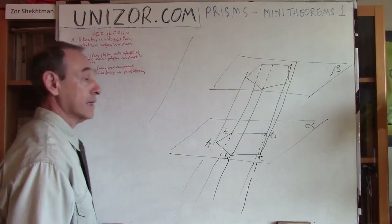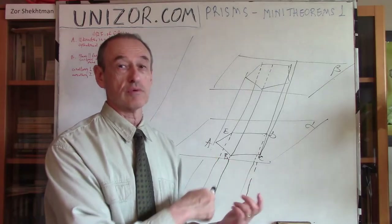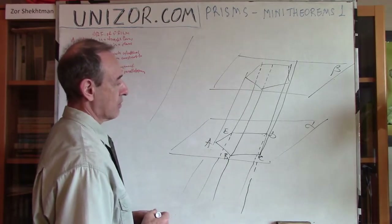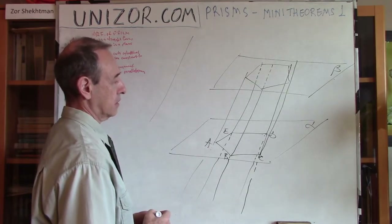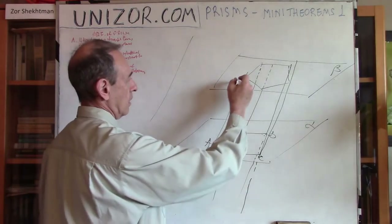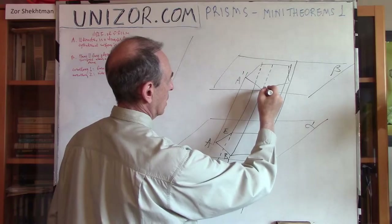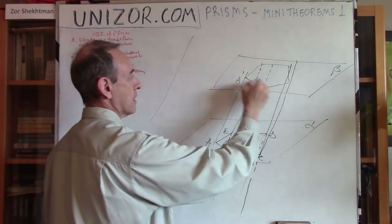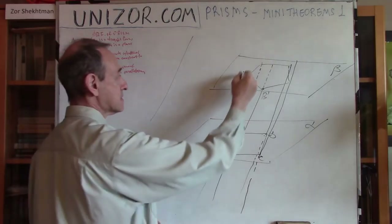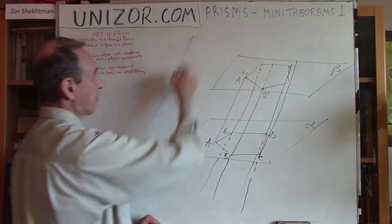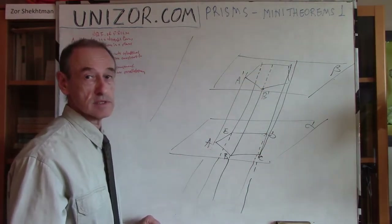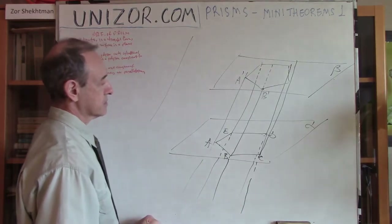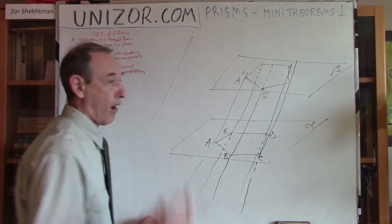Here is how. I do encourage you to, instead of watching this lecture right now, try to prove it yourself and then watch. First of all, let's consider two points A and B which are vertices of our base polygon directrice on plane alpha. Now, these are the corresponding A-prime and B-prime points where these two lines intersect plane beta. Since all these lines are supposed to be parallel to the generatrix — that's how we construct the cylindrical surface, from each point on the directrice we draw a line parallel to it — so AA-prime and BB-prime are parallel to each other.